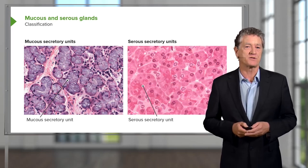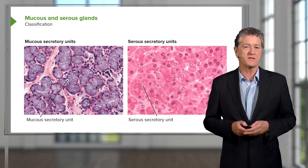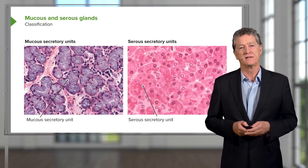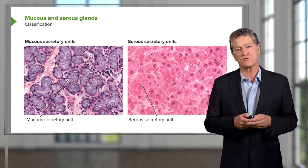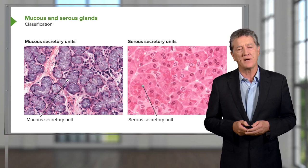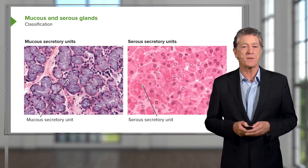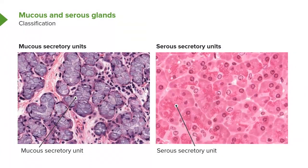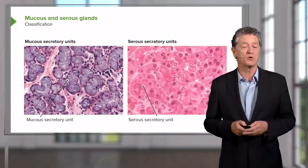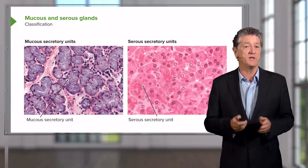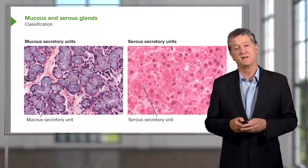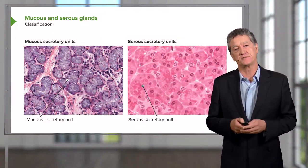Going back to the mucous secreting unit — the cells there have nuclei that are squashed against the base of the cell, so they appear flattened. The serous secreting cells, on the other hand, have nice rounded nuclei. Often that's a good indication, a good way to identify the difference between mucous secreting cells and serous secreting cells.